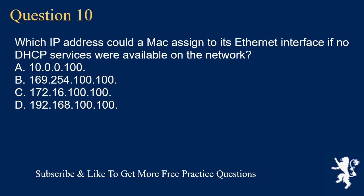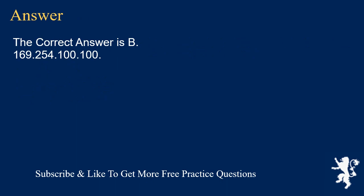Question 10. Which IP address could a Mac assign to its Ethernet interface if no DHCP services were available on the network? A. 10.0.0.100. B. 169.254.100.100. C. 172.16.100.100. D. 192.168.100.100. The correct answer is B: 169.254.100.100.